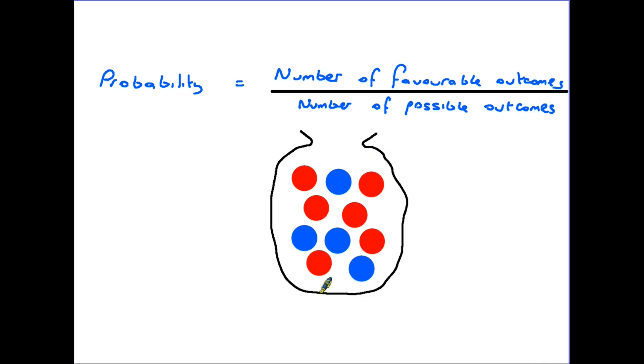Here we have a bag and in the bag there are coloured counters. Some of them red some of them blue. What we're going to have a look at is the probability of putting your hand in the bag and pulling out a blue counter. Let's first have a look at the bottom part of this formula. The number of possible outcomes. Well that simply means that when you put your hand in the bag you could pick any one of those counters. So if we total up the number there are 10 counters in the bag. So the number of possible outcomes is that you could pull any one of those counters.